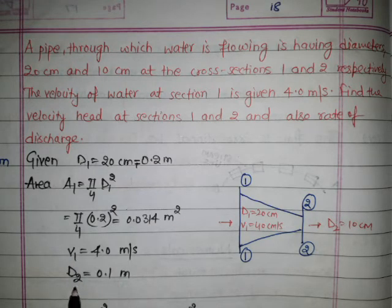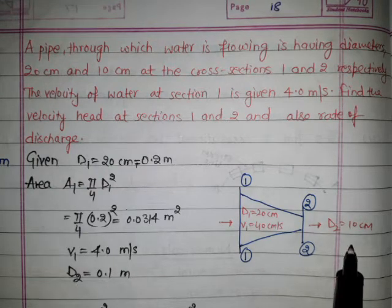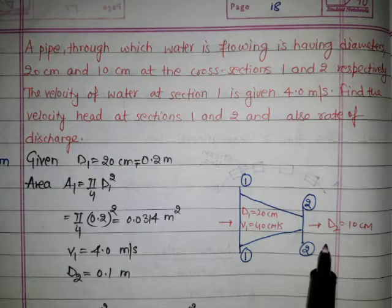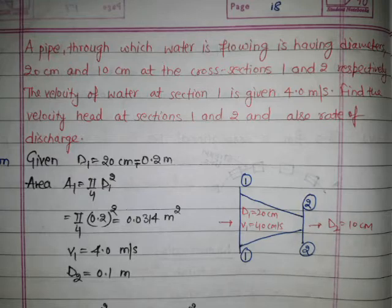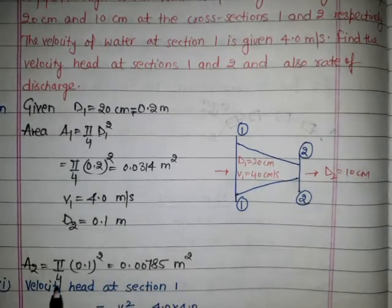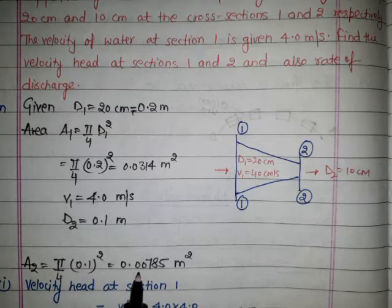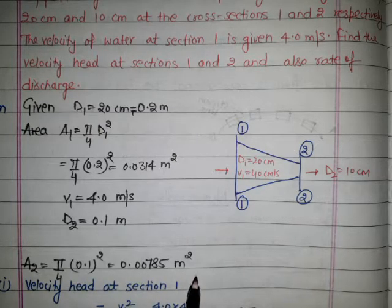The diameter at section 2 is given as d2 = 0.1 meter, which is 10 centimeter. We can easily find a2 = π/4 × d2² = 0.00785 meter square.